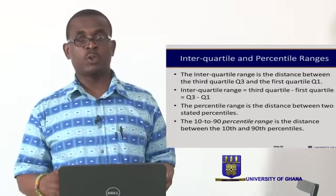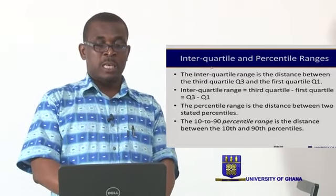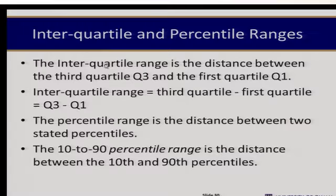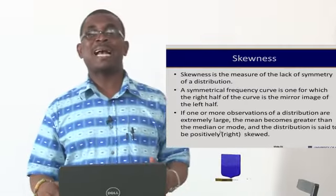Once quartiles are computed, we can calculate the interquartile range (IQR), which is simply the difference between the third and first quartiles. We can also compute percentile ranges — for example, the 10th-to-90th percentile range is the difference between the 90th and 10th percentiles.